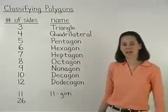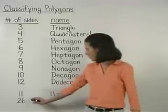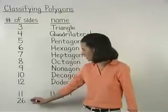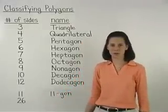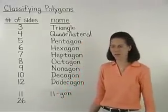And if a polygon has 26 sides, we can call it a 26-gon.